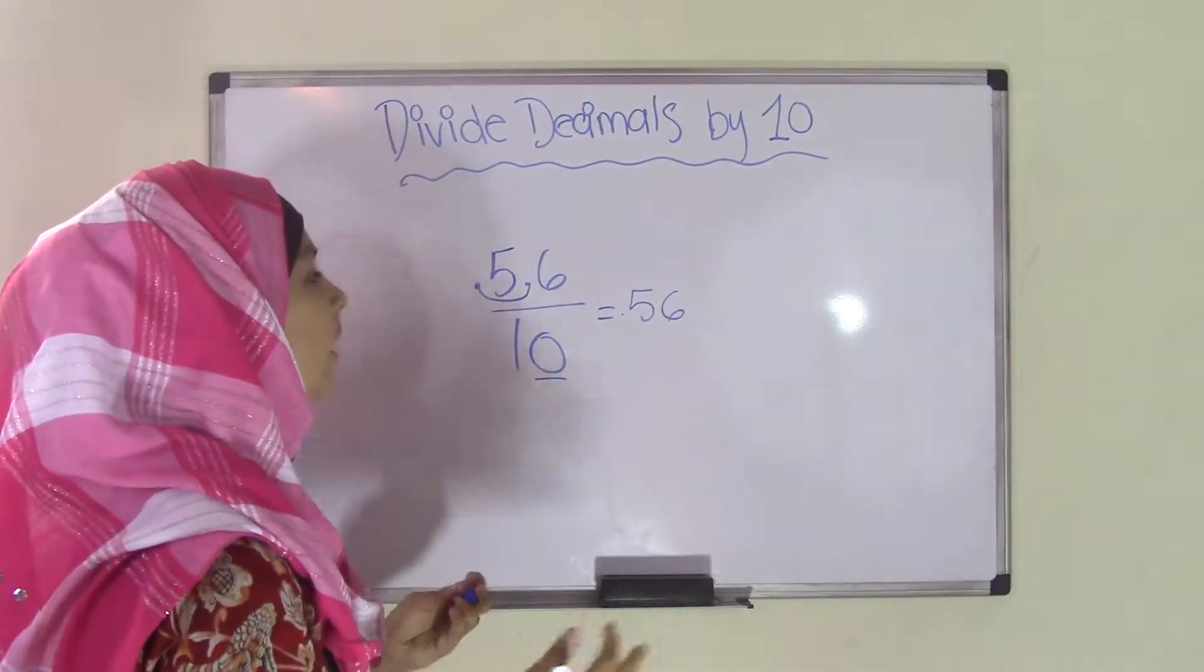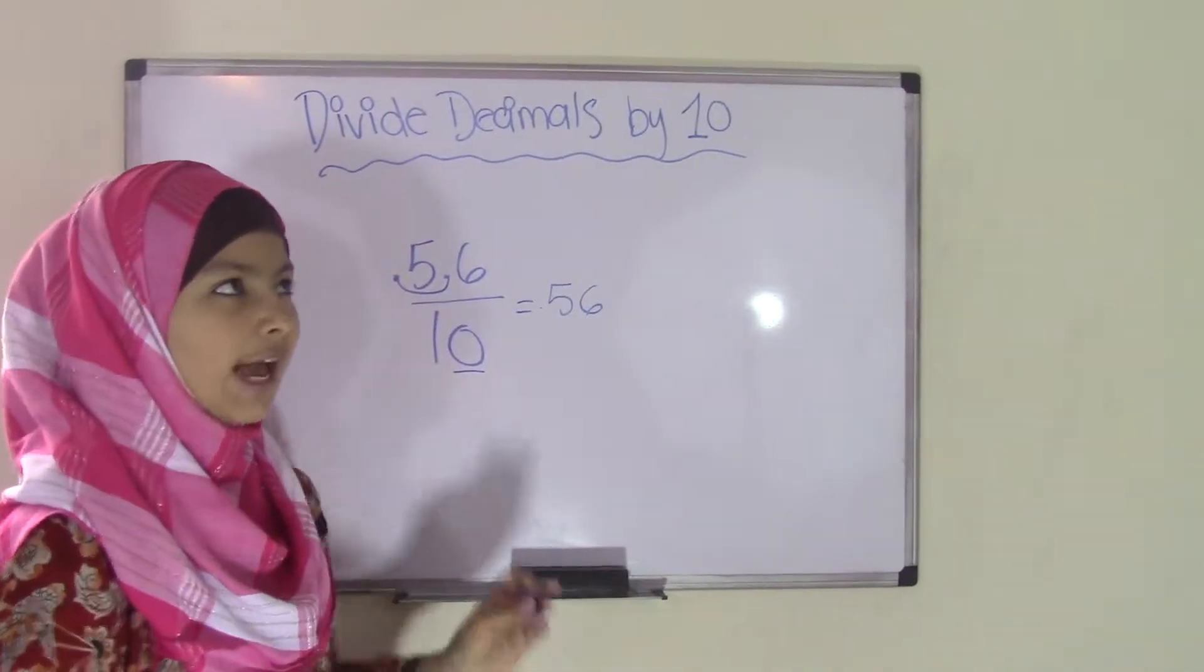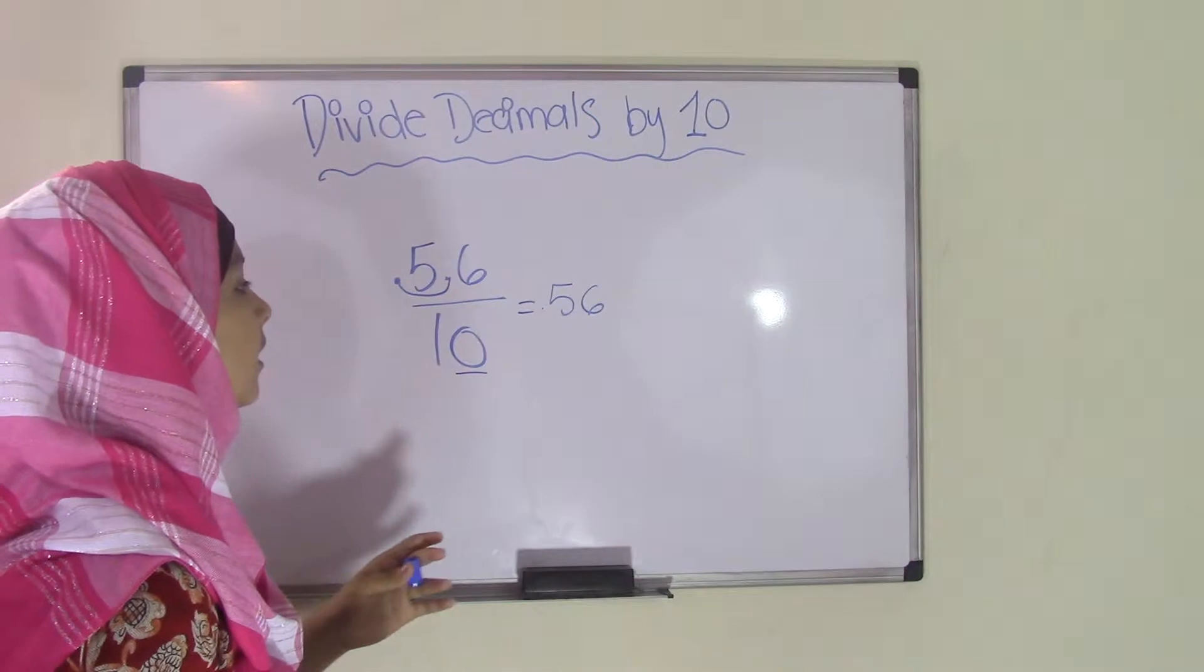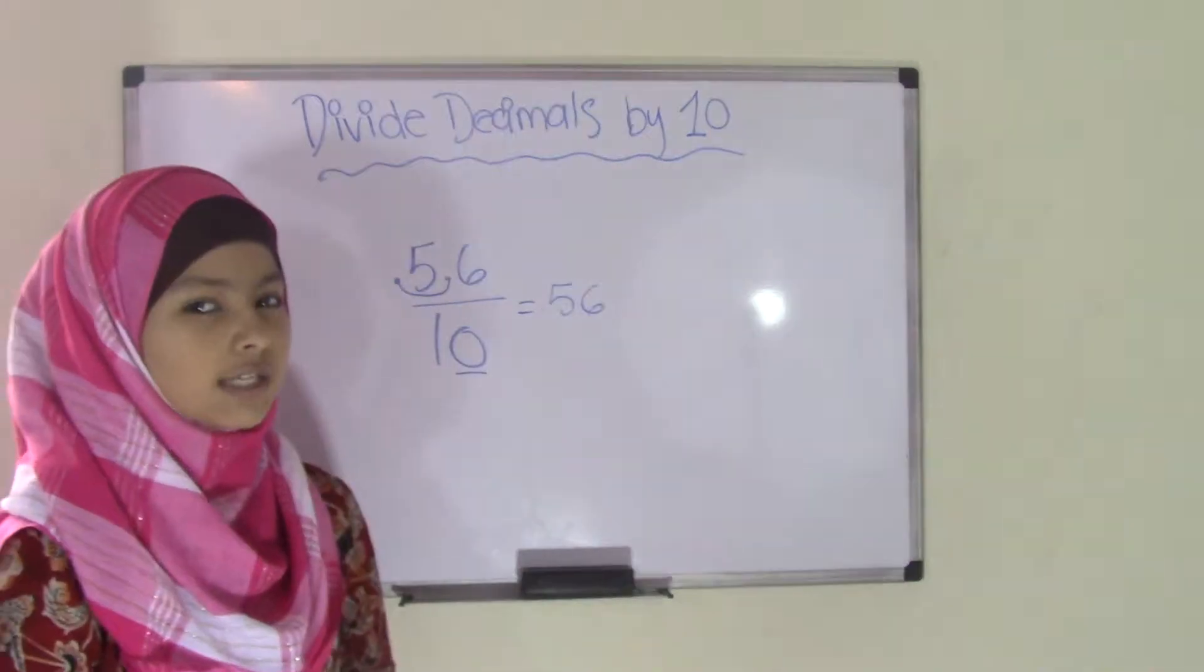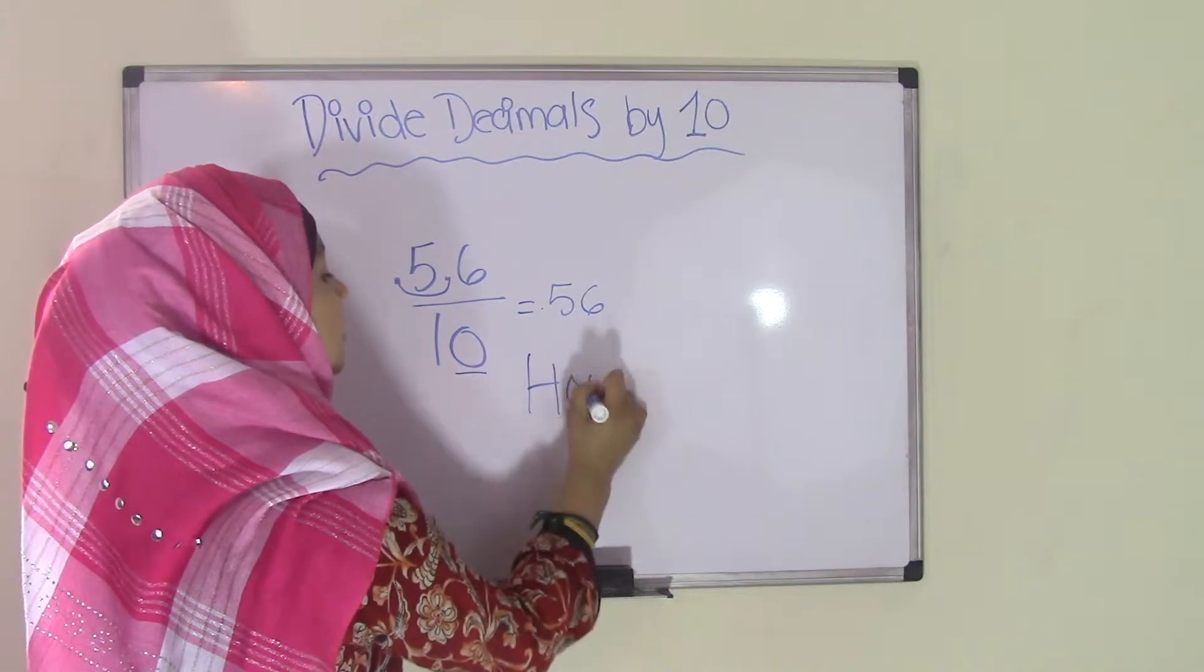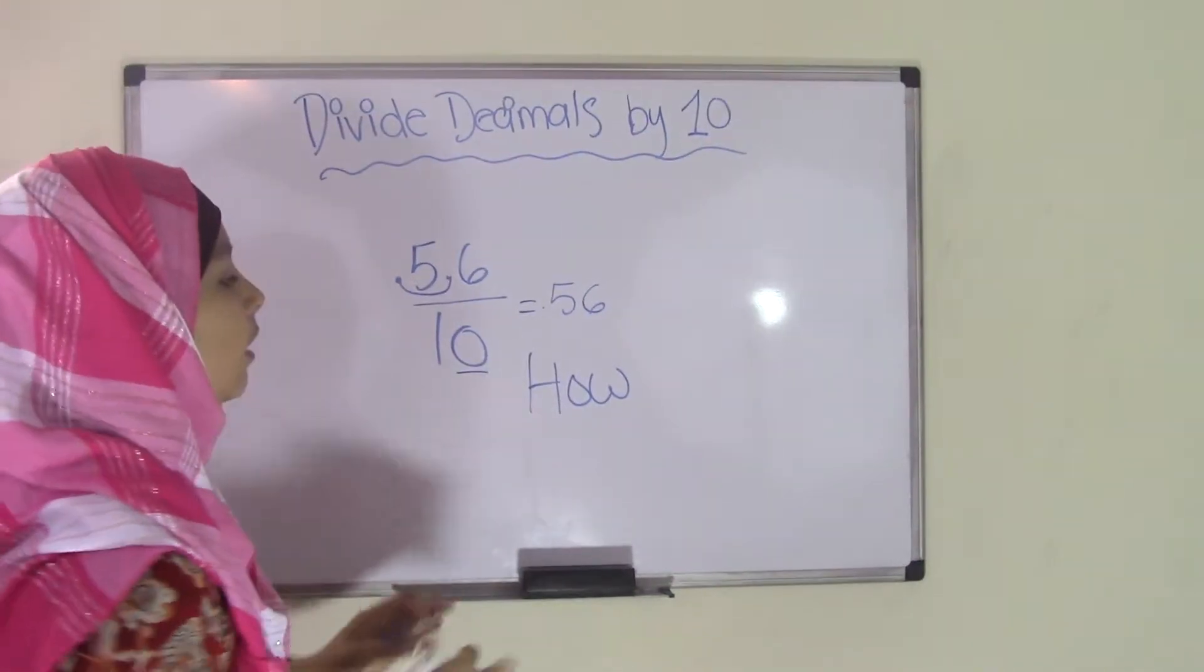But how did you get that? Have you ever wondered how did I make a 5.6 to a 0.56? That's where the logic comes in. So how is the question here? Well, there is, you use place value to find this.